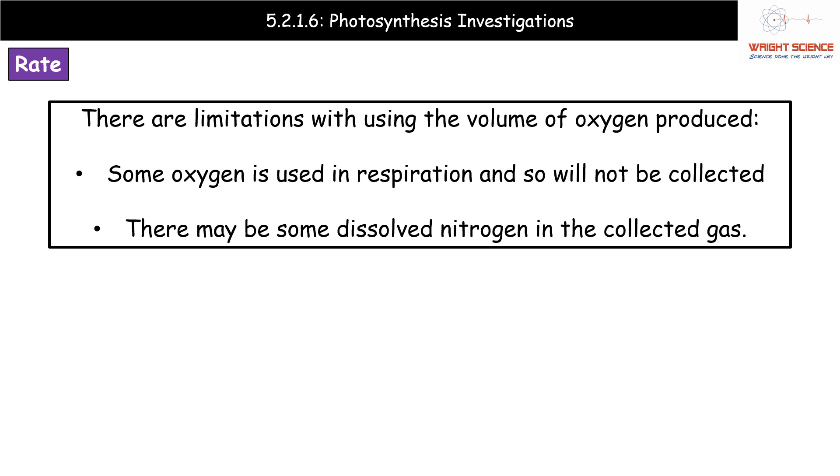If we think generally about limitations with using the volume of oxygen produced, it's never going to be a perfect measure of the rate of photosynthesis. One reason is that some of the oxygen we produce in photosynthesis is going to be used in the process of respiration. So not all oxygen produced will be released from the plant. Secondly, when collecting the gas, it's not all oxygen we're collecting. We could have some dissolved nitrogen in that collected gas as well.